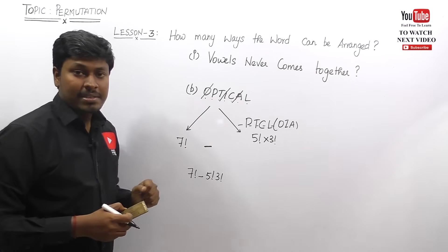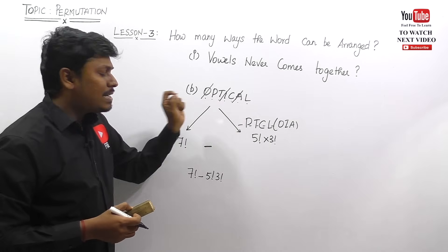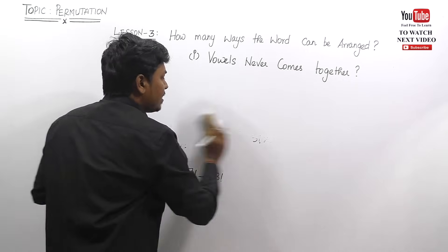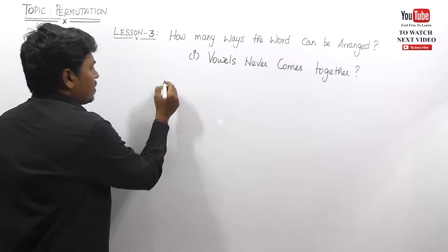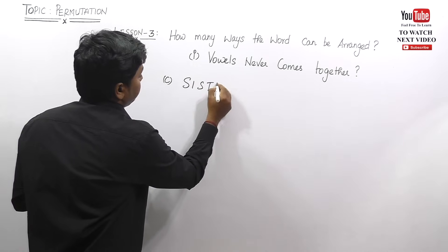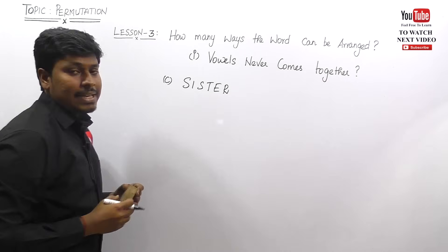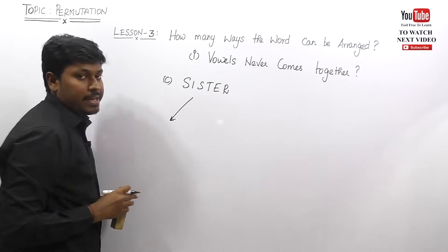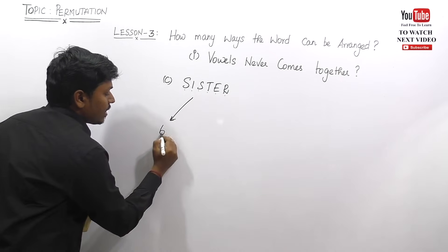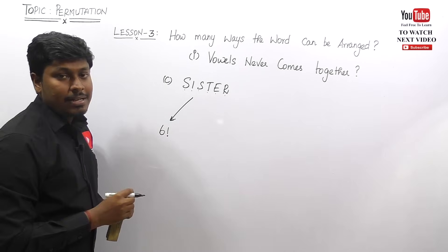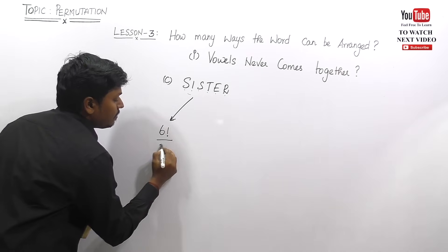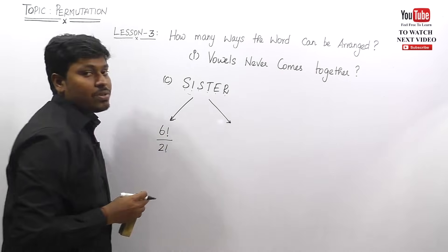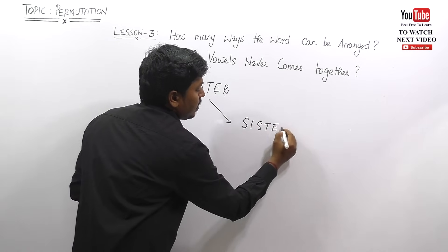In the first and second questions, no letter was repeated. Now let me take an example where a letter is repeated — the word SISTER. They ask how many ways the word can be arranged so that vowels never come together. According to lesson one, count letters: one, two, three, four, five, six — six factorial. But the letter S is repeated two times, so divide by two factorial. This is the total number of ways the word SISTER can be arranged.